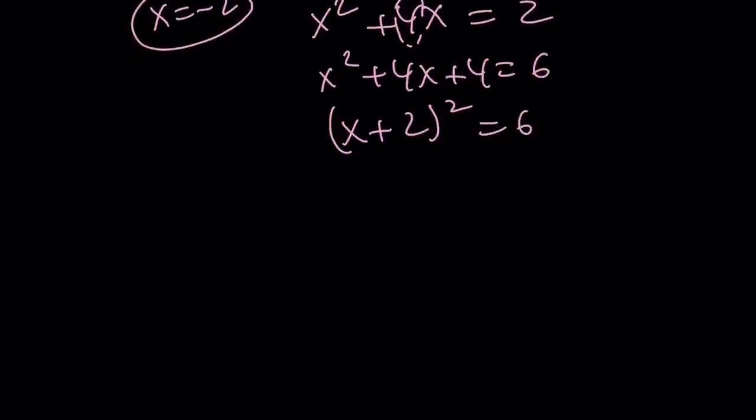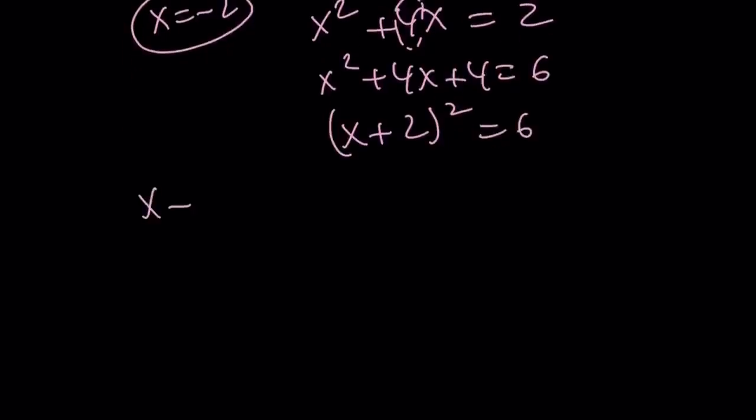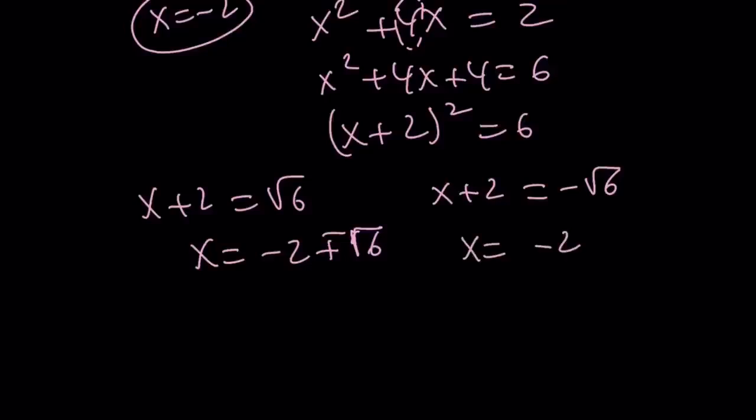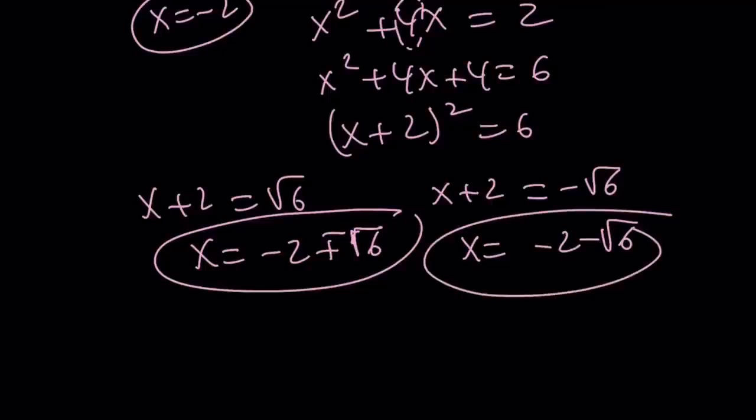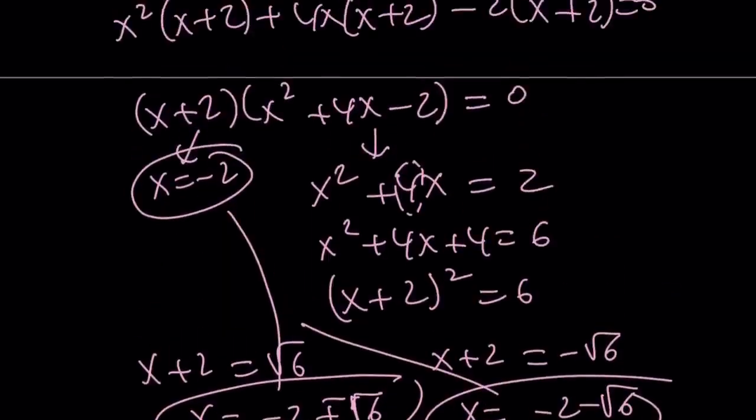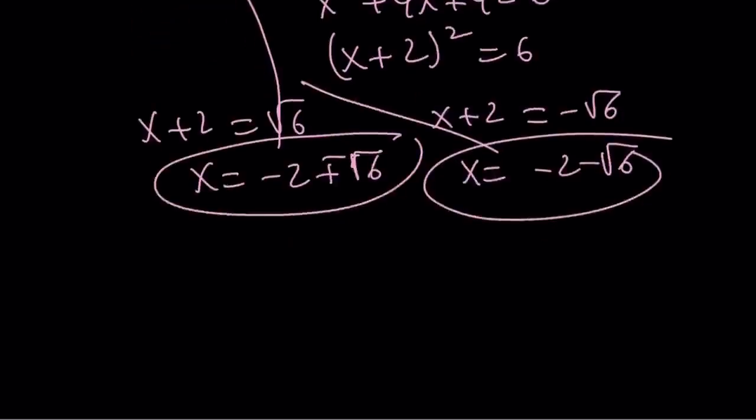So this is like x plus 2 quantity squared equals 6. Square root both sides. And there are two numbers whose squared equals 6. x plus 2 can be root 6, or x plus 2 can be negative root 6. And from here, we get the solutions. Negative 2 plus root 6, because I like to write the rational part first. Negative 2 minus root 6 is another solution, along with x equals negative 2. We have three solutions because this is a cubic, and they're all real.